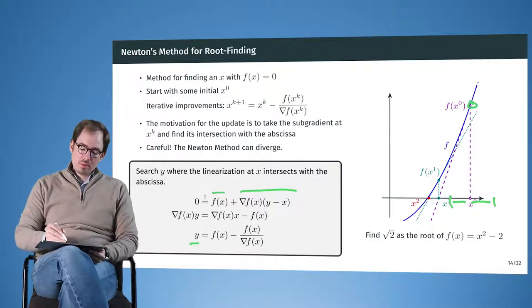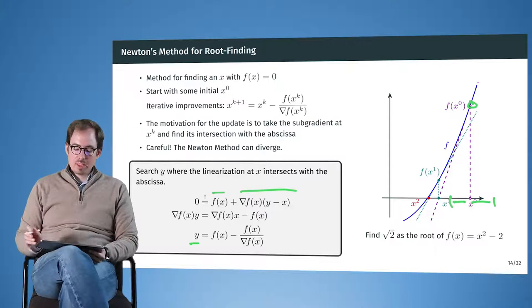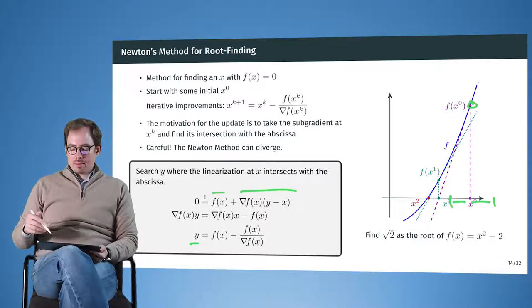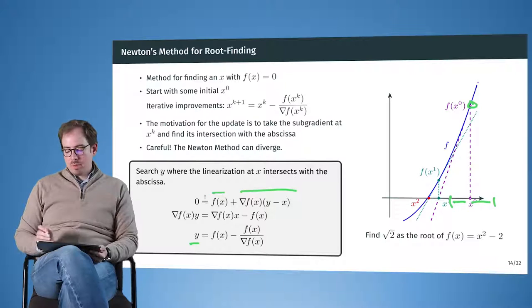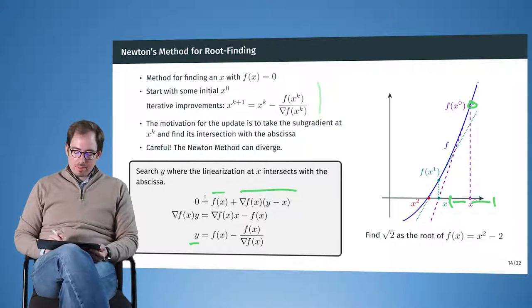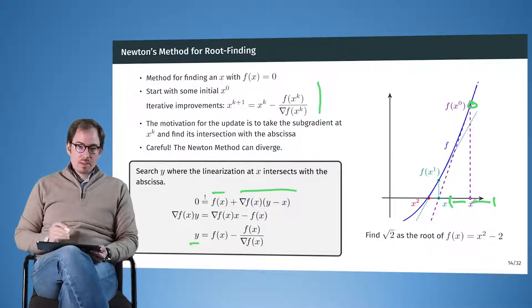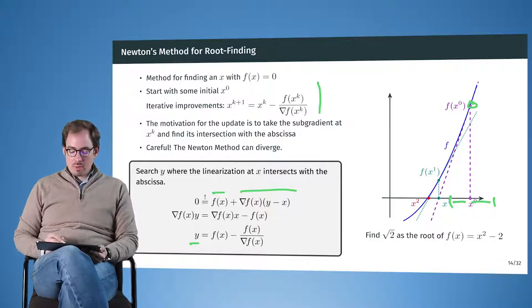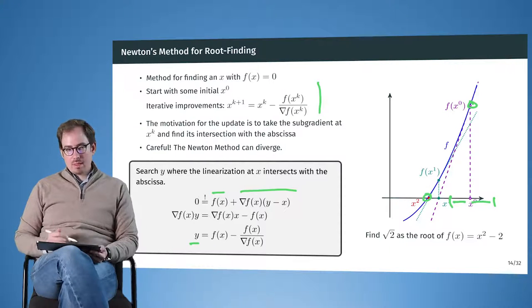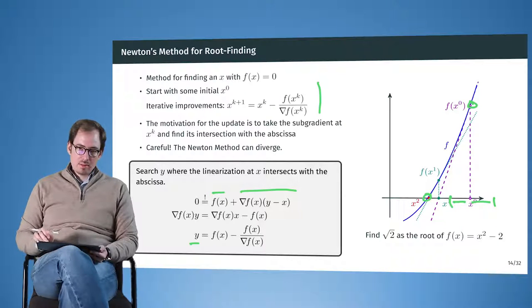And then we do this iteratively, so up here you see how this is performed iteratively, and quite fast we will get to the location where the root, or in this case, the square root of 2 is located. Newton's method can also diverge, but for today we will ignore that part, in most cases Newton's method will converge rapidly. We will later have a better characterization of how fast Newton's method can converge.